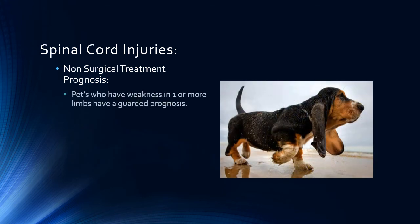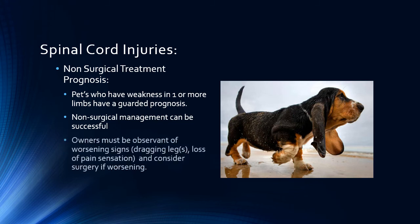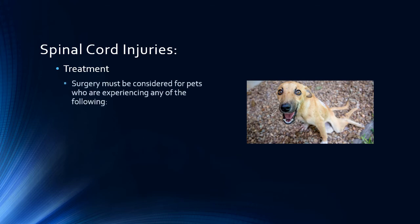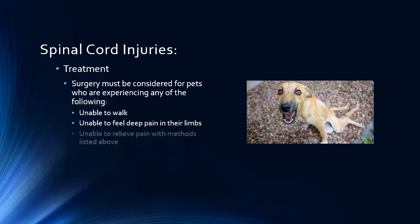Pets with weakness in one or more limbs have a more guarded prognosis; however, they can frequently be successfully treated with non-surgical means. Owners must be vigilant to watch for worsening signs such as dragging one or more legs or loss of pain sensation. If these things should occur while being treated with non-surgical means, surgery may have to be considered. Surgery must be considered for pets who are unable to walk or feel deep pain, or if the pet's pain cannot be managed adequately with non-surgical means.